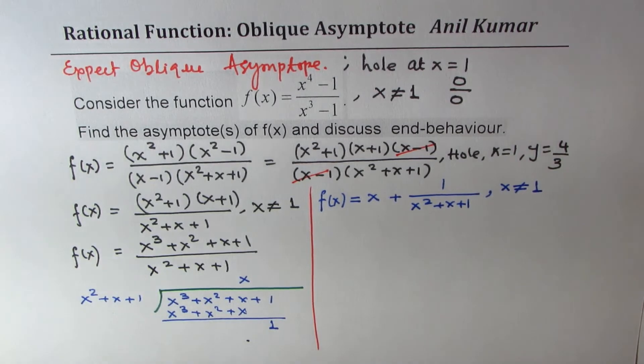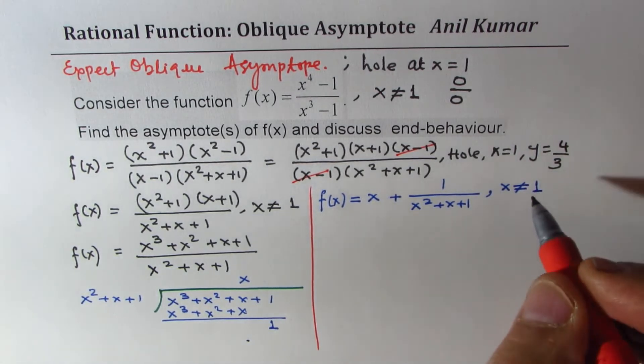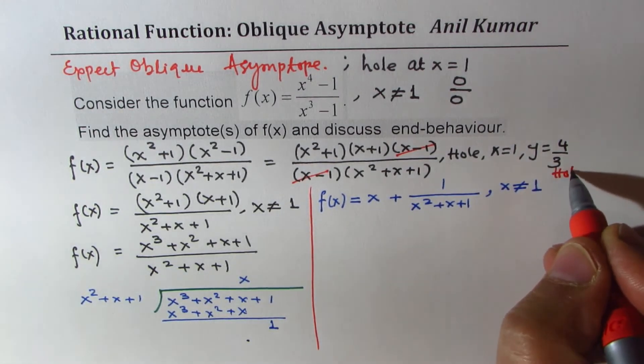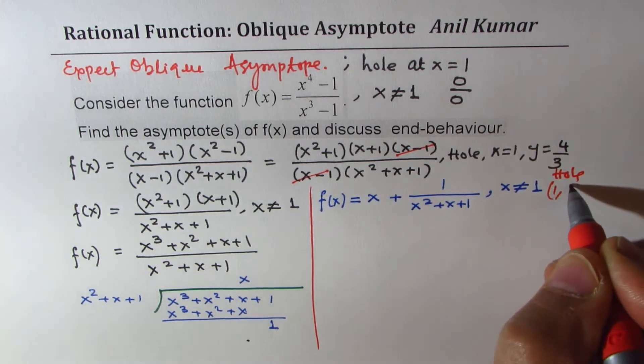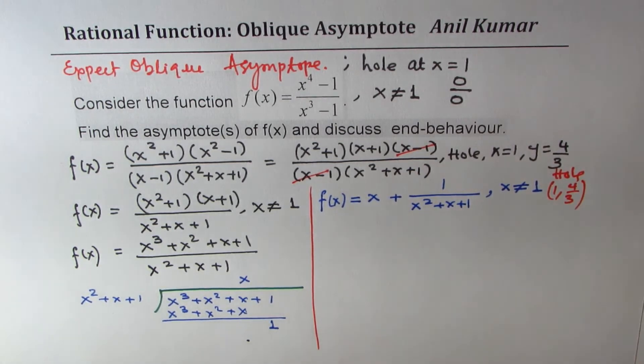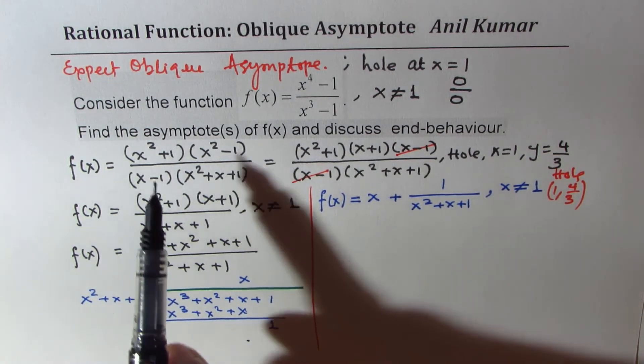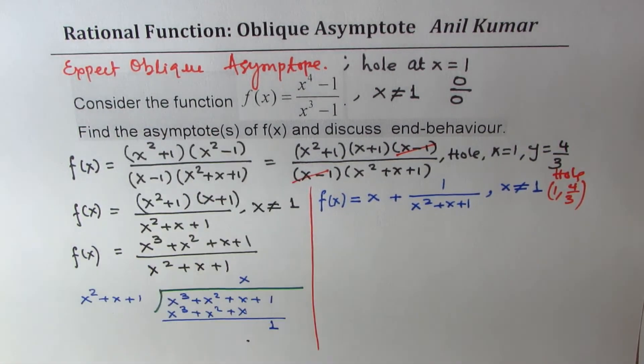So since we have a hole, we did find that we have a hole at 1, whose y value is 4 over 3. Now, it is clear that we have one asymptote, which is oblique asymptote. We do not have any vertical asymptote in this case. Now, let's talk about end behavior.